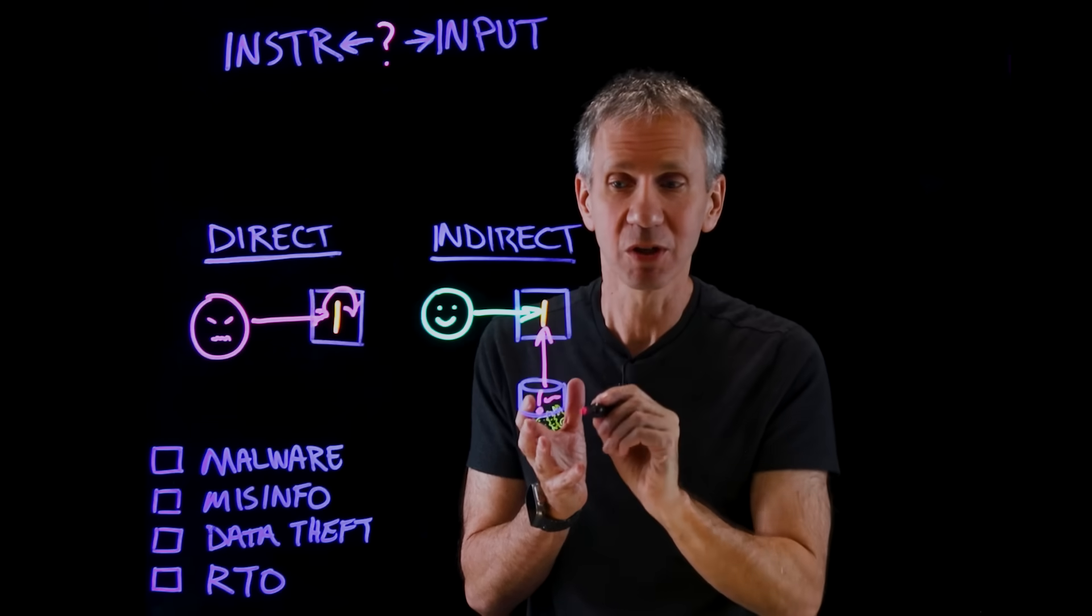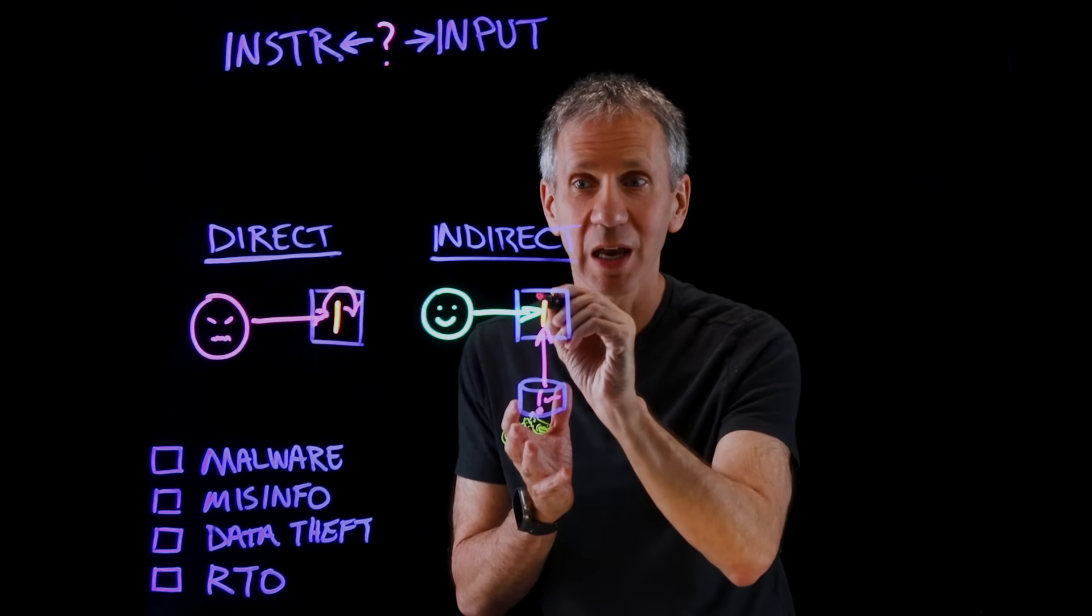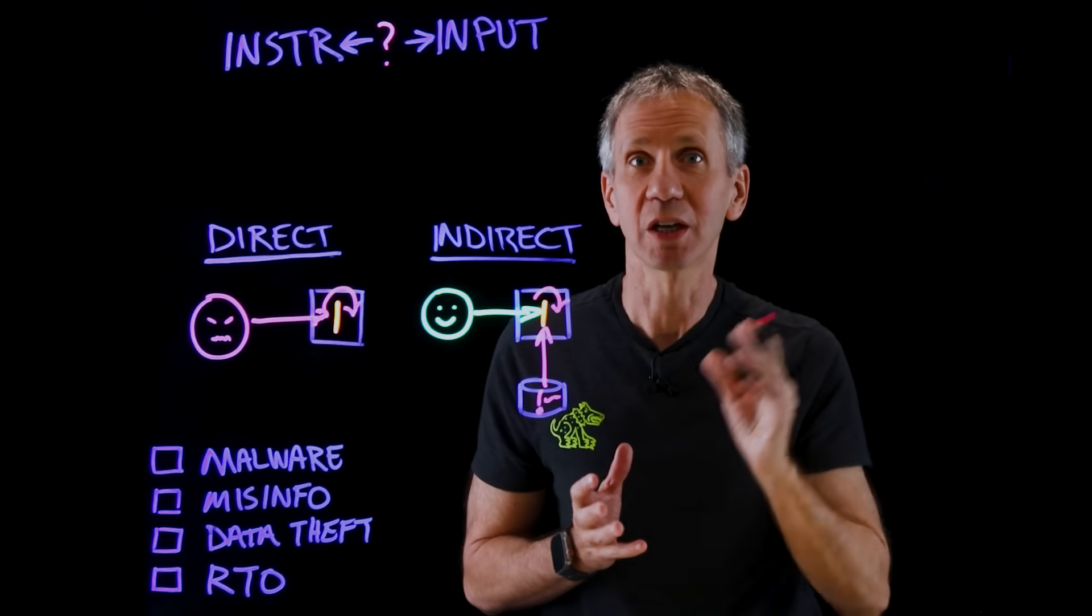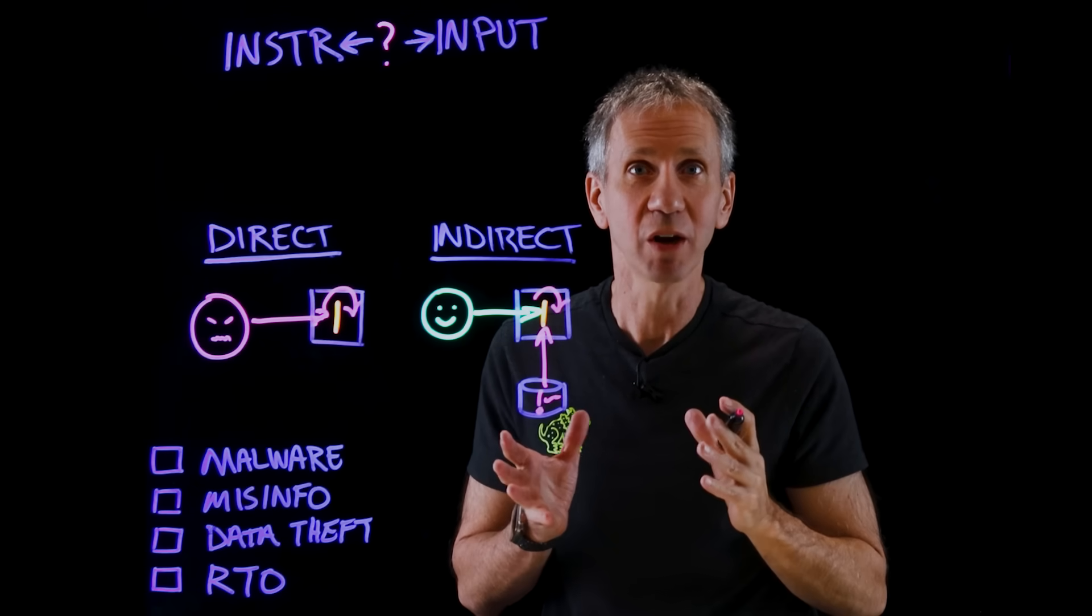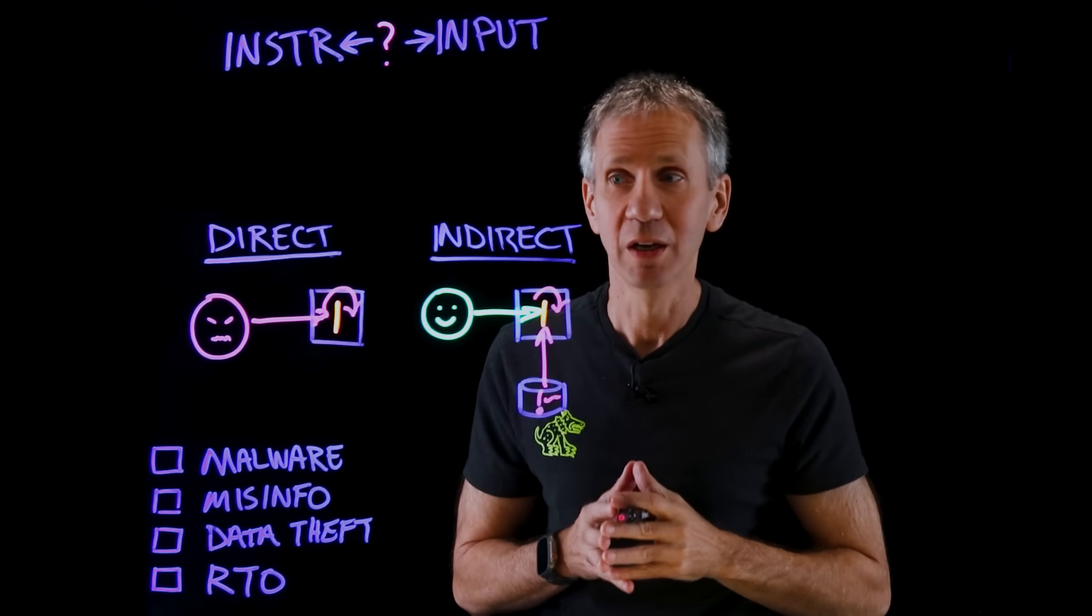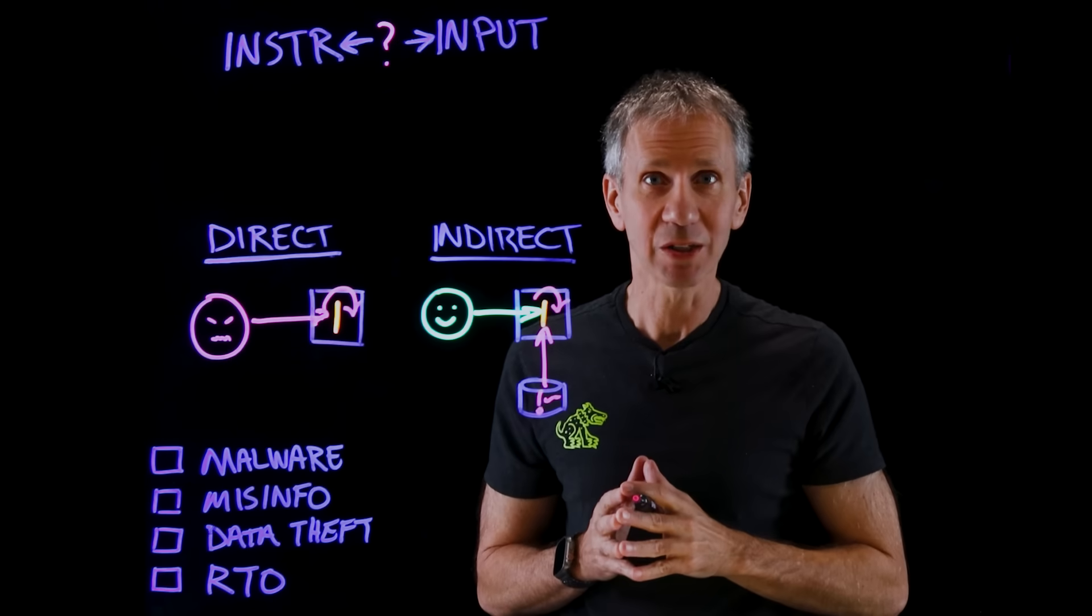But this data has been poisoned in some way, and the prompt injection is actually here. So this person puts in something good, but they're going to pick up the results of this, and that's what's going to cause it to get around the guardrails, to do the jailbreak, to be susceptible to the social engineering.